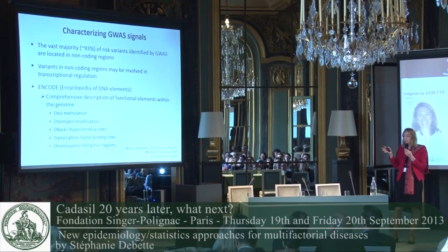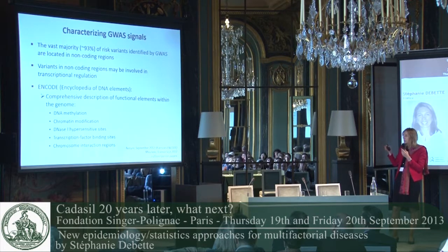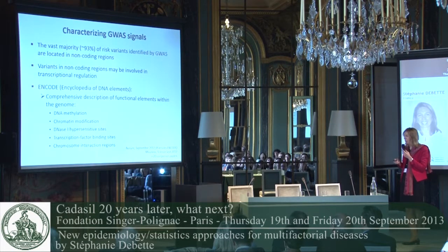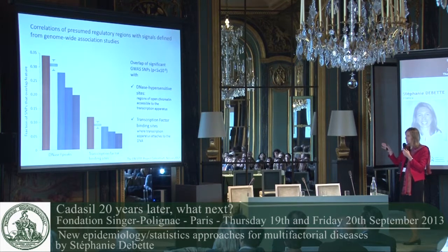About the significance of these variants that are identified: the vast majority — 93% of the SNPs identified through GWAS — are located in non-coding regions. These may be involved in transcriptional regulation. We now have a much better understanding through the recent ENCODE project, published in simultaneous papers in Nature and Science, which gives a very comprehensive description of functional elements within the genome. This may be very helpful in annotating the GWAS findings. The SNPs identified through GWAS more often mapped to DNase hypersensitive sites or transcription factor binding sites than would be predicted by chance.